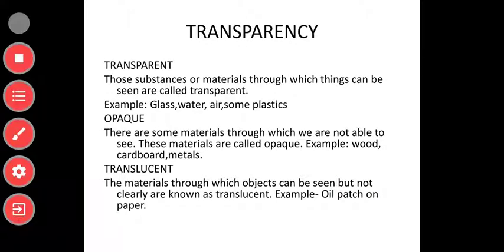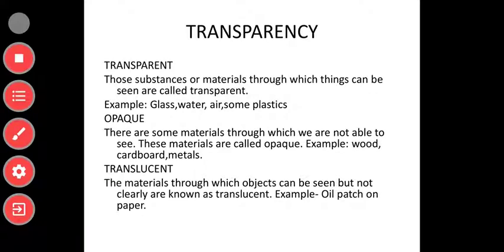Next is transparency. Those substances or materials through which things can be seen clearly are called transparent — examples: glass, water, air, and some plastics. For instance, a book cover through which you can see the other side, or a window glass pane. Light passes through them and you can see the other side. Some plastics like polythene covers are also transparent.